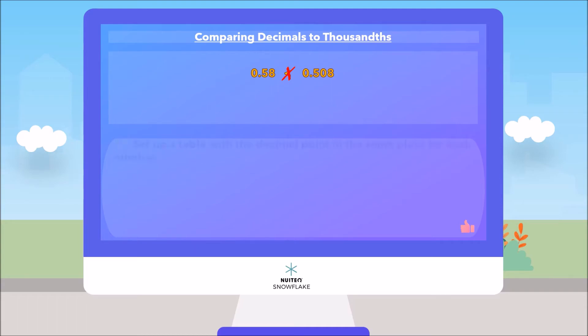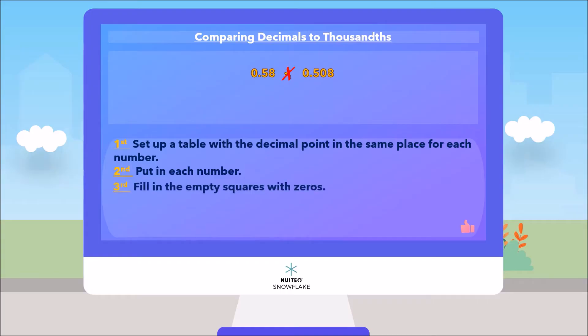First, set up a table with the decimal point in the same place for each number. Then, put in each number. Fill in the empty squares with zeros. Compare using the first column on the left. And, if the digits are equal, move to the next column to the right until one number wins.